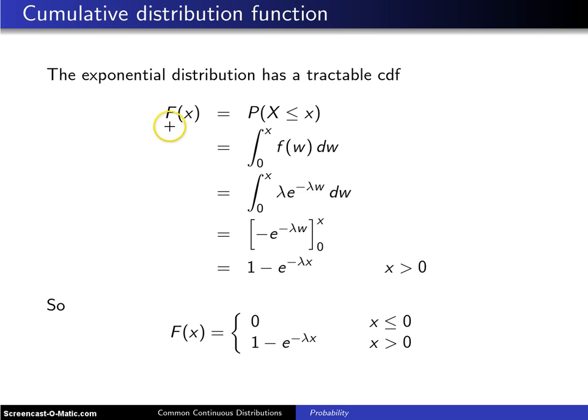But at least for now you will like how this all works out. Capital F of x, the cumulative distribution function for an exponential random variable, by definition is the probability that X is less than or equal to x.